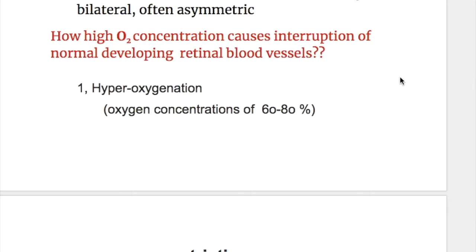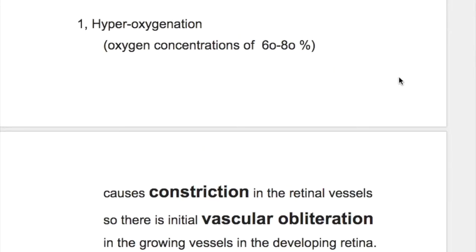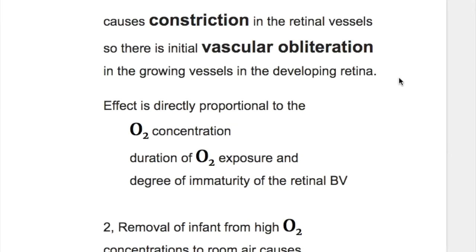How does high oxygen concentration cause interruption of normal developing retinal vessels? Hyperoxygenation — oxygen concentration of 60 to 80 percent or more — causes constriction in the retinal vessels, leading to initial vascular obliteration in the growing vessels of the developing retina.